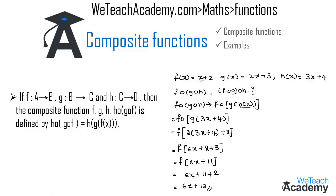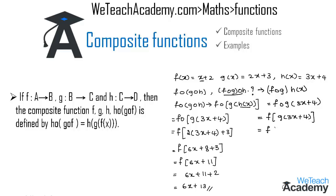Now let us consider f circle g circle h again, defined by f of g of h of x. The function h of x is 3x plus 4, so we write f of g of 3x plus 4. Finding g of 3x plus 4 by replacing x with 3x plus 4, we get f of 2 into 3x plus 4 plus 3, which comes to f of 6x plus 11.